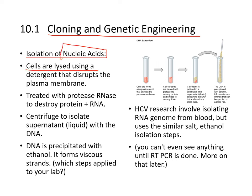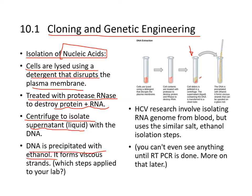Cells are lysed and then using detergent and salt — detergent that disrupts the plasma membrane — and combined with that, you treat it with protease and RNase to destroy proteins and RNA. Then it's centrifuged to isolate the supernatant, which separates the debris from the supernatant. Then DNA is precipitated using ethanol. You have done this in the lab — think about which step this involves.